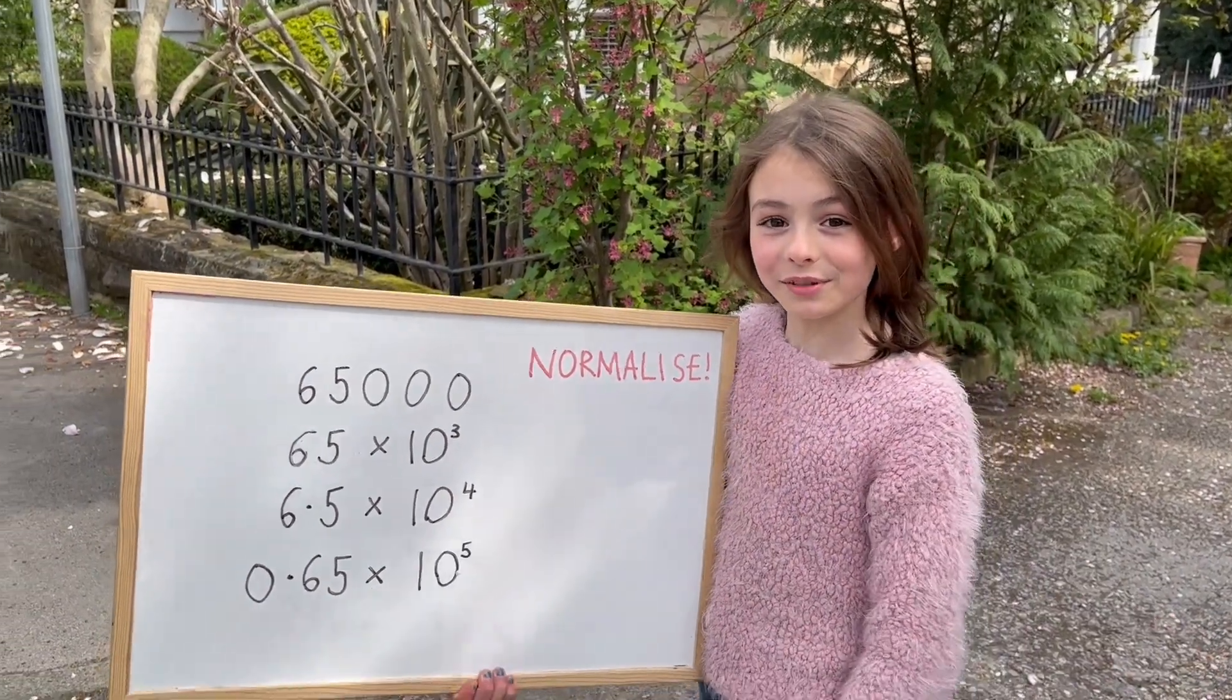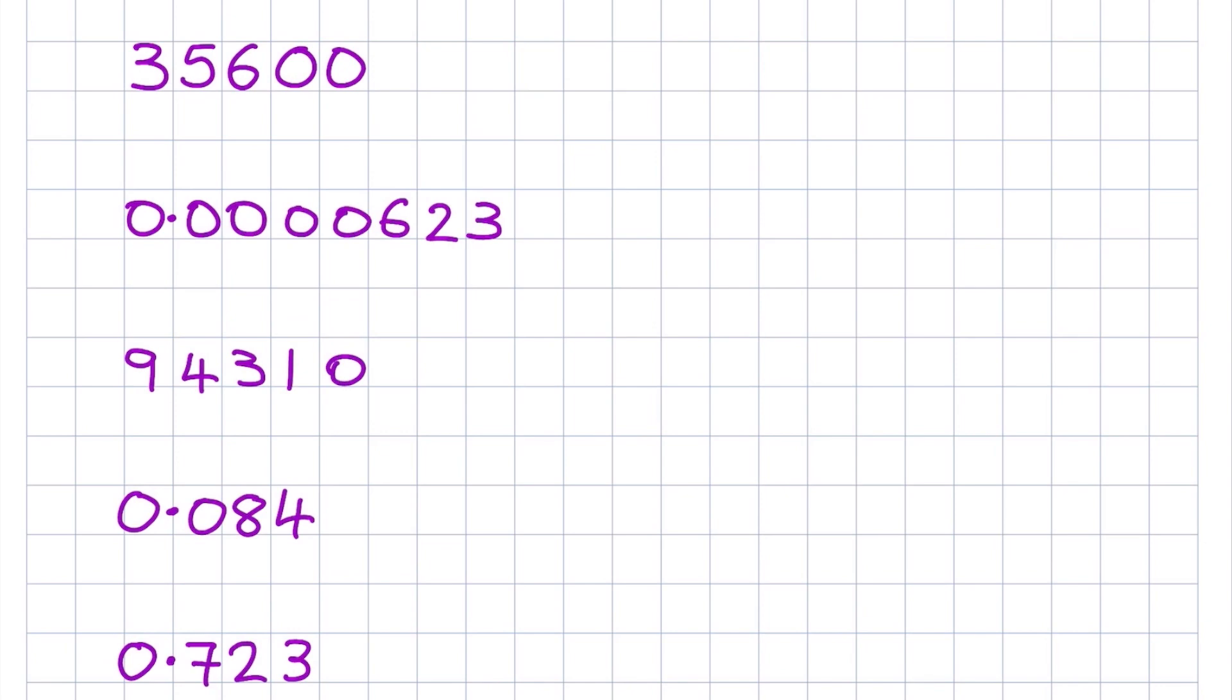Let's look at some examples. So let's turn 35,600 into normalized scientific notation. The first step is to turn this number into a number between 1 and 10. How about 356? That is too big. It's bigger than 10. How about 0.356? But that's less than 1, so that's too small.